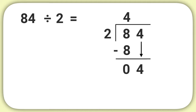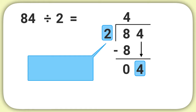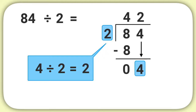Now we just repeat everything we did to the 8. Start by dividing 4 by 2, and think in your head that 4 divided by 2 equals 2. So we'll write that answer 2 above our line.